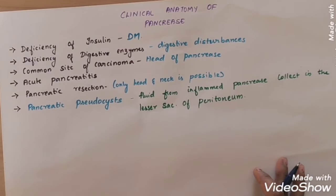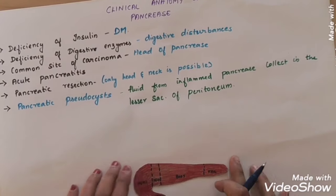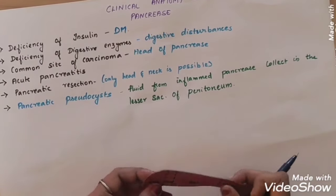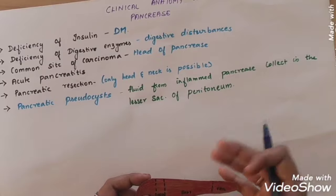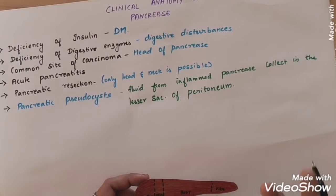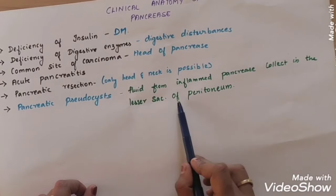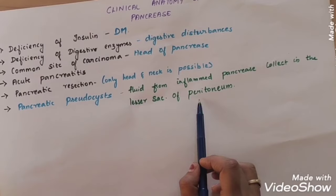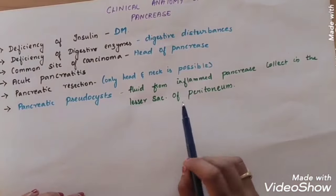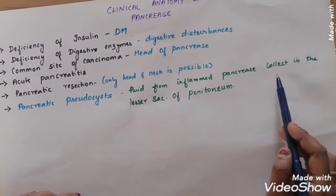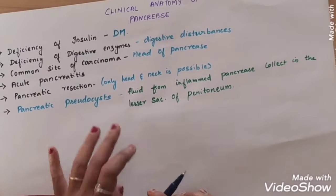This is what we call a pancreatic pseudocyst. It involves the lesser sac and greater sac. When there is inflammation in the pancreas, fluids and enzymes leak out. The fluid accumulates in the lesser sac of the peritoneum. If we look at that, a cyst forms in the pancreas, but due to the inflammation the fluid accumulates in the lesser sac of the peritoneum — that is why it is called a pancreatic pseudocyst.